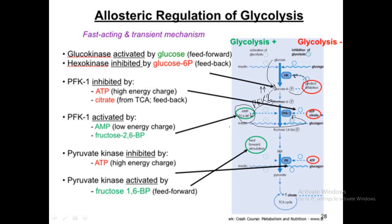PFK1 gets activated allosterically by fructose-2,6-bisphosphate. Once fructose-2,6-bisphosphate binds to the allosteric site of PFK1, fructose-1,6-bisphosphate is formed. This is how fructose-2,6-bisphosphate regulates PFK1 — an example of allosteric regulation. So we have seen one case where the product inhibits (feedback inhibition) and another where a product accelerates formation (feed-forward activation).